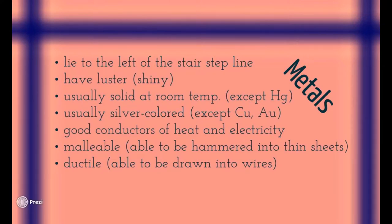Let's talk about metals. These are all the properties you need to know. To the left of the stair-step line — everything down to that line. Some of the properties I can always ask about. The majority of the periodic table, about 80 to 90%, is metal, which is kind of crazy when you think about it. There are very few non-metals and metalloids on there.